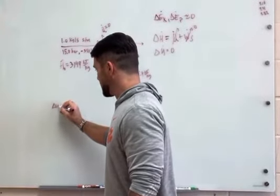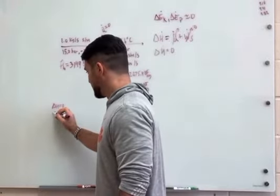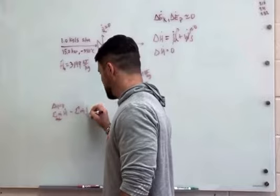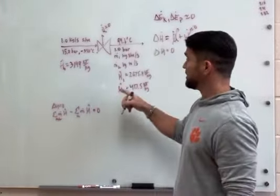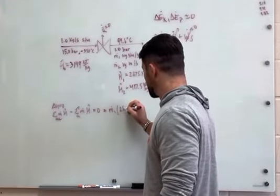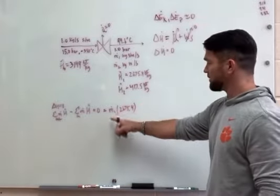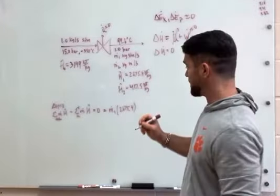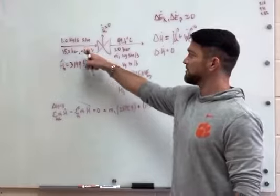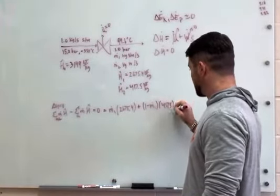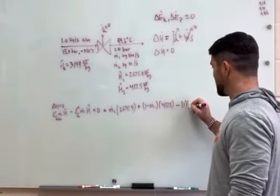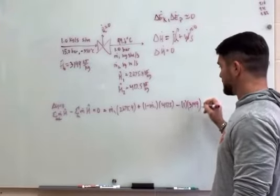Finally, I'm just going to write my delta H equals zero. In this case, we have the sum of M H out minus the sum of the M's times the H's in equals zero. So the enthalpies coming out, it's going to be M1 times the steam, so this is 2675.4 kilojoules per kilogram. I'm just going to drop some units for the calculation because everything's in kilojoules per kilogram or kilograms per second. Plus, we also have water coming out maybe, and this is going to be 1 minus M1 times 417.5 kilojoules per kilogram minus the sum of that which comes in. And that's going to be 1 times 3149. Sum of this equals zero.